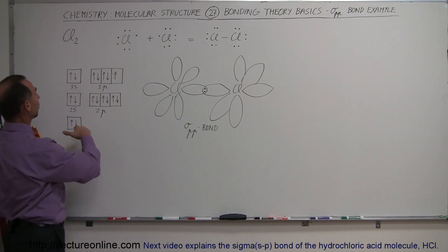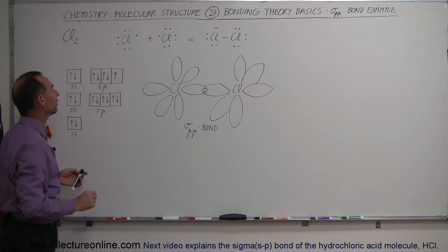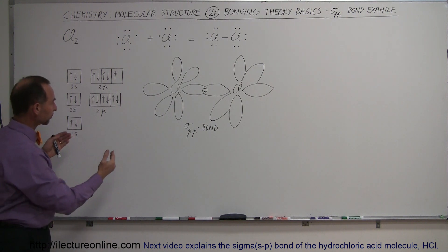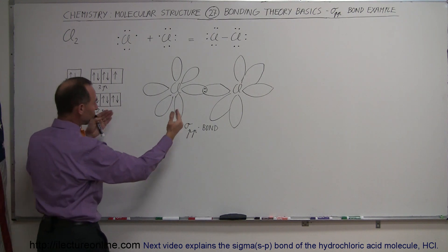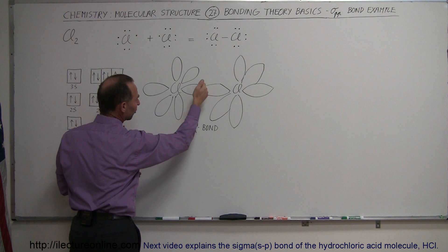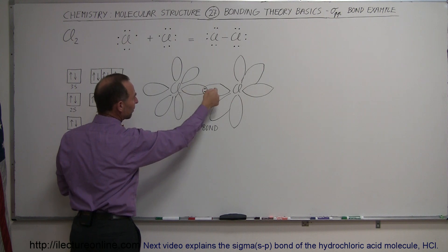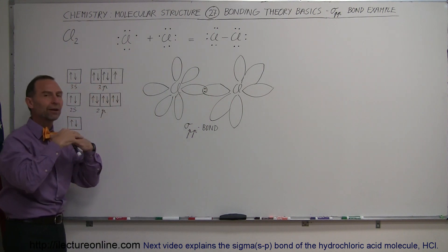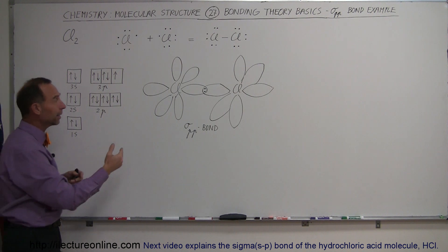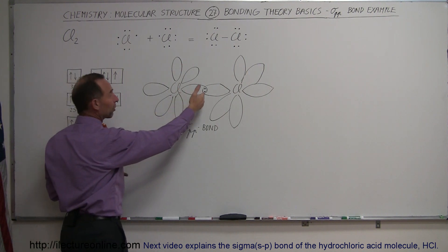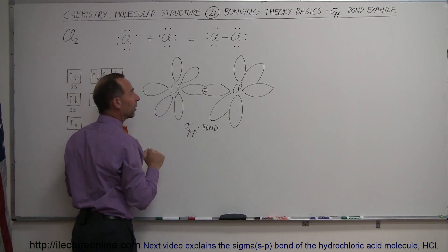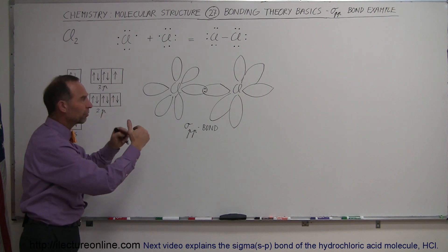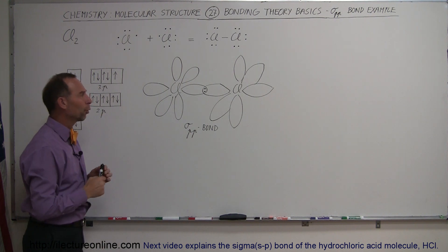Since each of the chlorines has one valence electron spot available, they can join together — they can have an overlapping situation between the p orbitals, put the two electrons in there, and therefore form that valence bond. The two electrons are in phase within the overlap position because there's only one electron contributed from both orbitals.